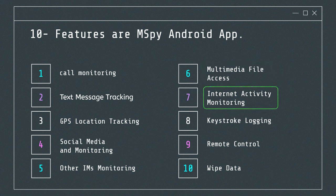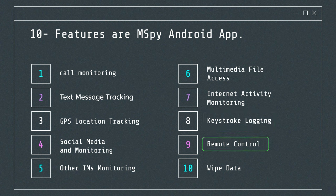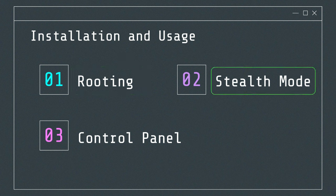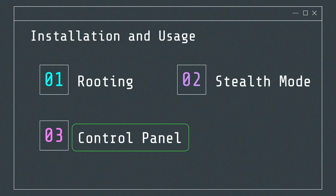Internet activity monitoring: track browsing history including visited websites and timestamps, and view saved bookmarks. Keystroke logging: capture all keystrokes made on the device, providing insights into what is being typed in any app. Remote control: lock the device remotely, wipe data, or perform a factory reset remotely. For installation, mSpy may require the target Android device to be rooted for full functionality, although many features work without rooting. Once installed, mSpy operates in stealth mode in the background. Users can access a web-based control panel to view collected data and configure settings.